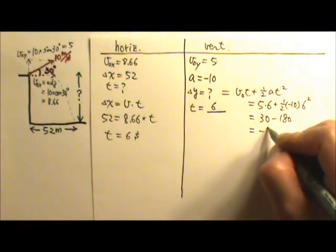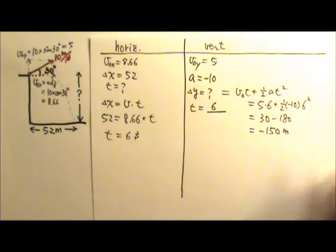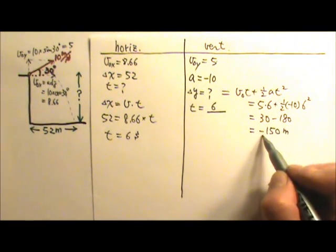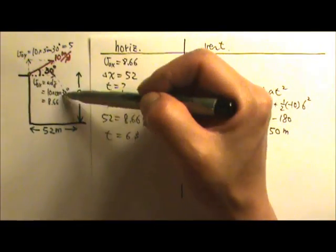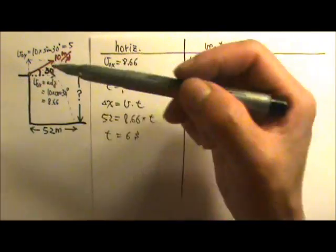And this gives us 30 minus 180, which is negative 150 meters. It makes sense for the delta Y to be a negative number, because the projectile lands lower than its starting height.